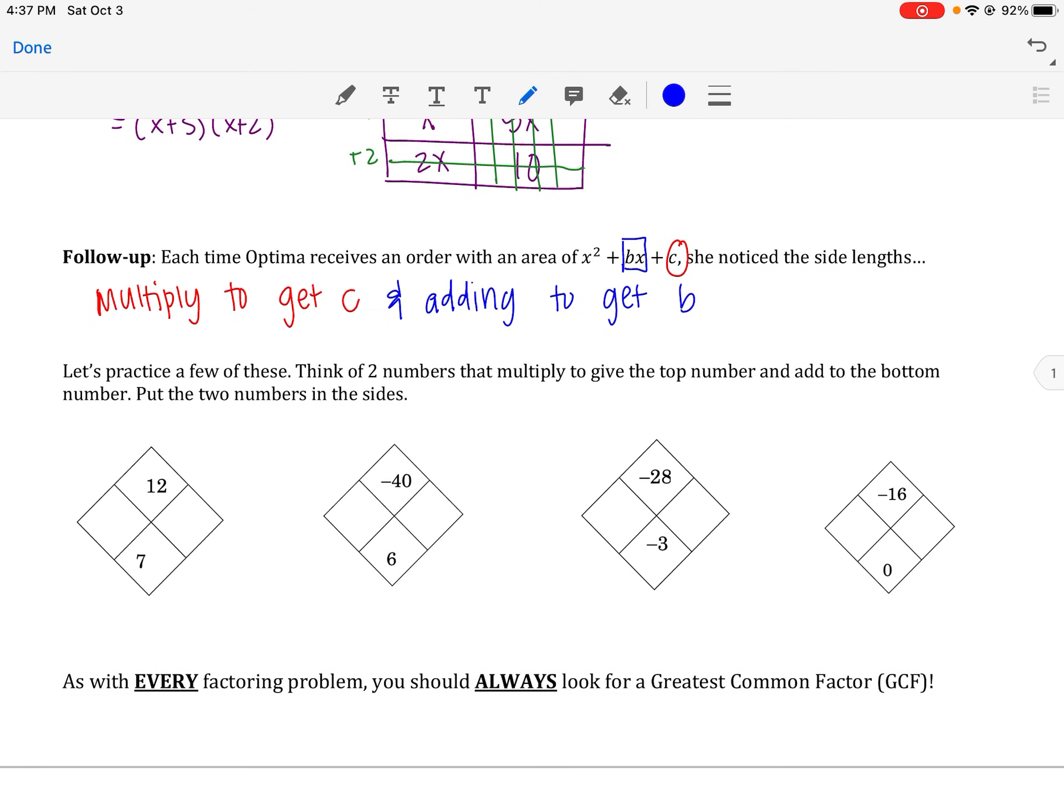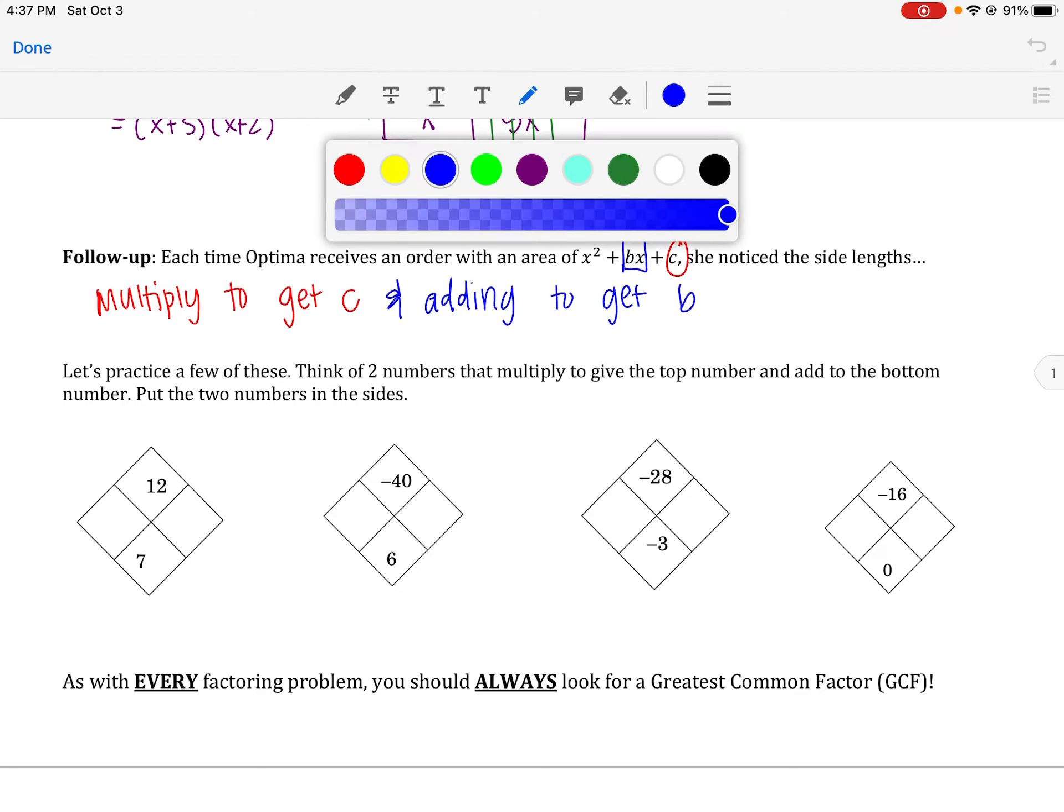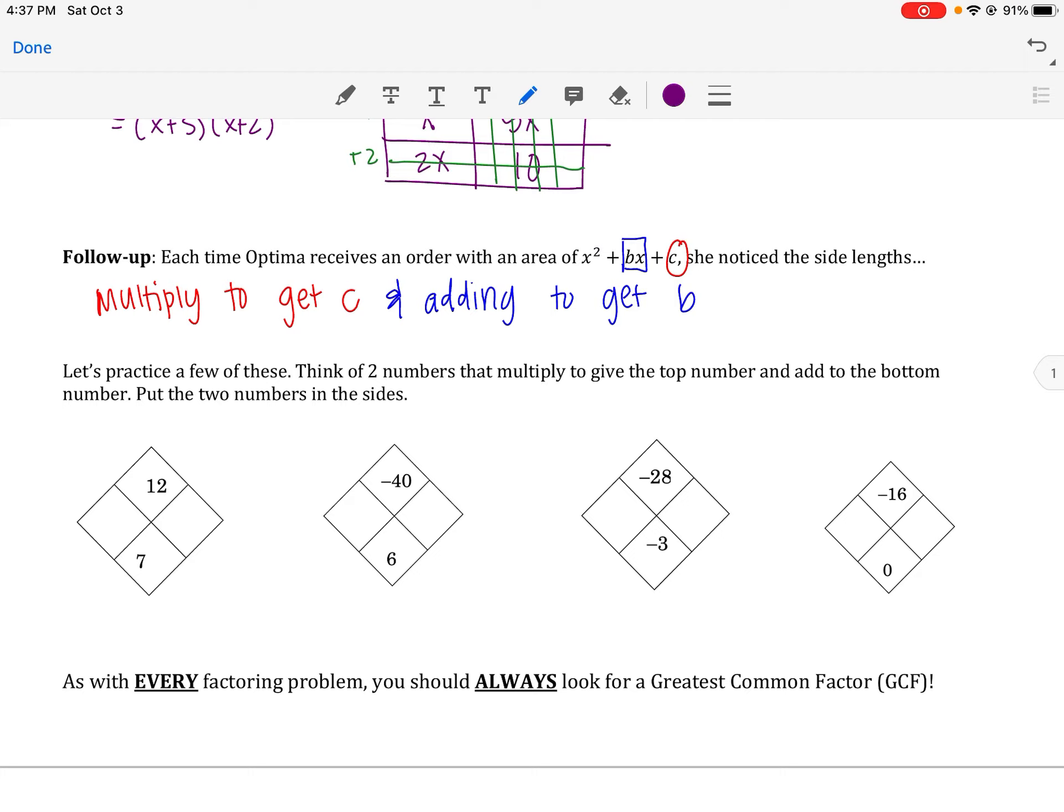Let's practice a few. Think of two numbers that multiply to give the top number and add to the bottom number. So think about 12. You want to say what multiplies to 12 but adds to 7? Maybe 1 times 12, but that adds to 13. Maybe 2 times 6, but that adds to 8. So then maybe 3 times 4. Hey, that does add to 7.